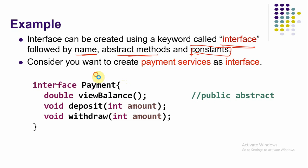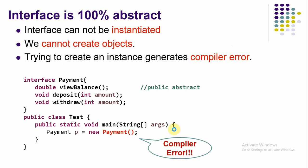For example, we'll create an interface called Payment as a payment services interface. We start with the interface keyword and give the name Payment, then include a list of functions — for example, view balance, deposit, and withdraw. Since interface is 100% abstract, we cannot create an object for it. If you try to create an object reference for this interface, you will get a compiler error.